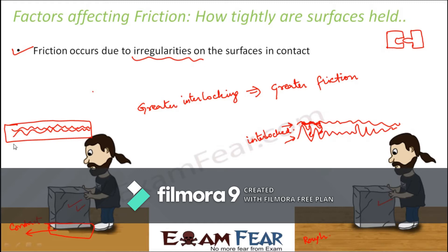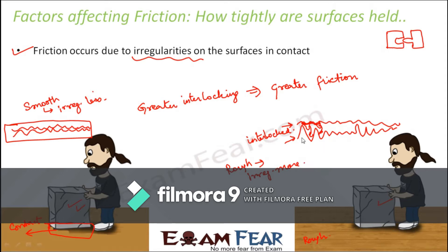In smooth surfaces, the irregularities are less, whereas in rough surfaces the irregularities are more. When you have more irregularities, you have more interlocking. Due to this, a smoother surface offers lesser friction when compared to a rough surface.